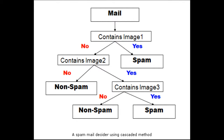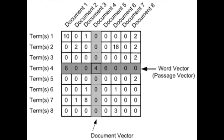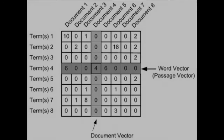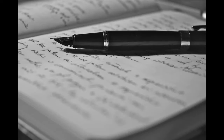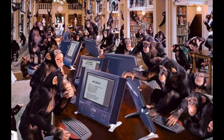Previously you learned about some of the basics, like how many NLP problems are just regular machine learning problems in disguise, and simple practical methods like bag of words and term document matrices. These allowed us to do some pretty cool things like detect spam emails, write poetry, spin articles, and group together similar words.